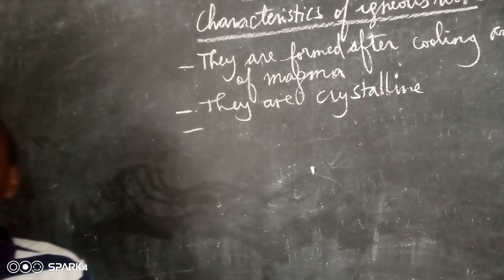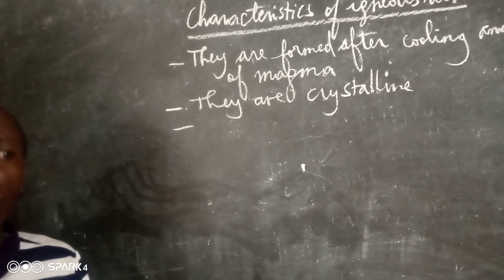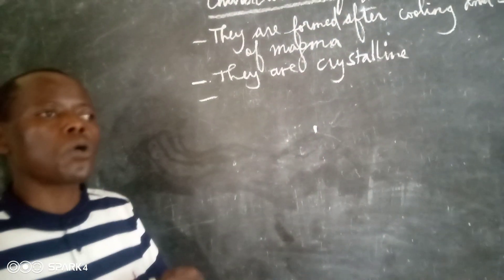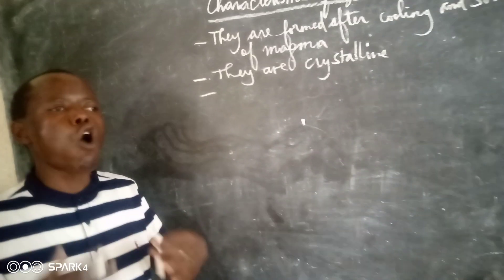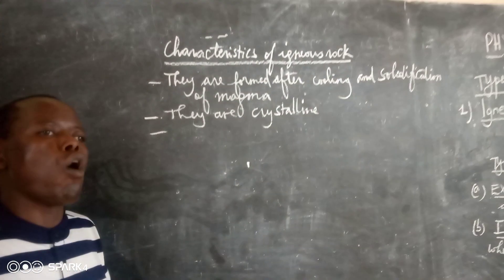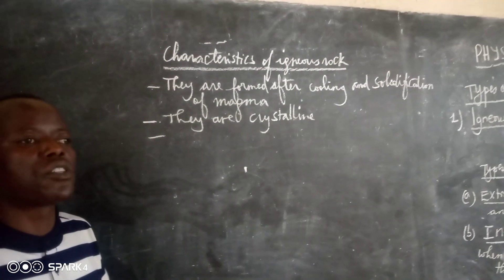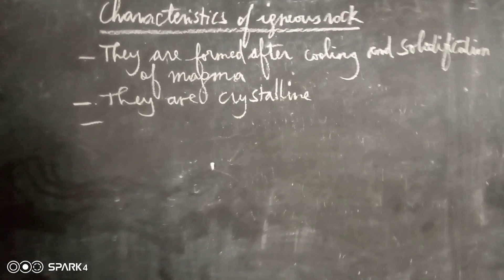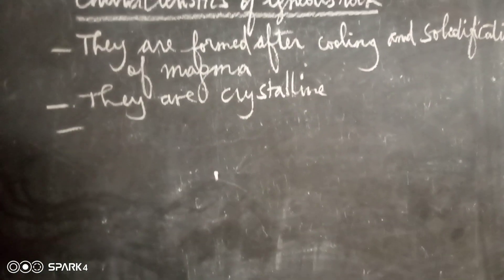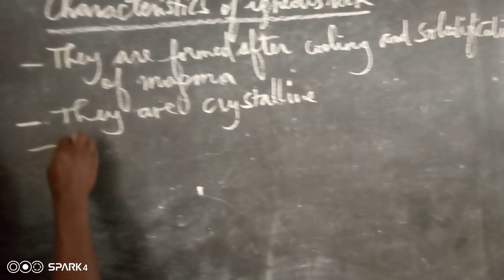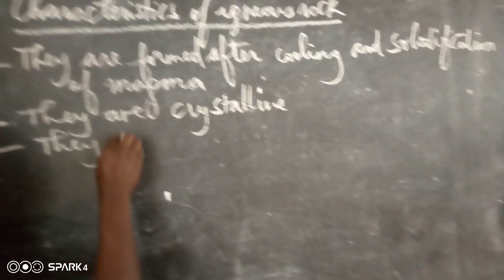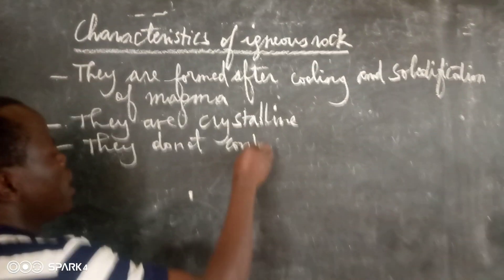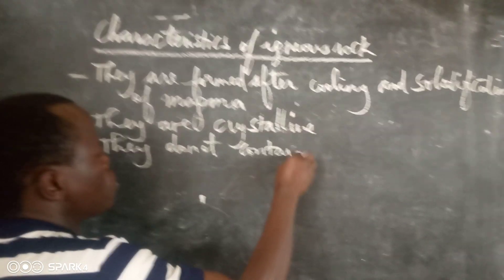Igneous rocks do not contain fossils, meaning that in igneous rock there are no animal or plant remains — dead plants or animal or plant remains. They do not contain fossils.